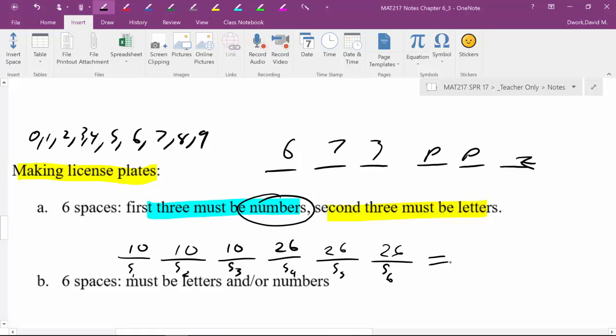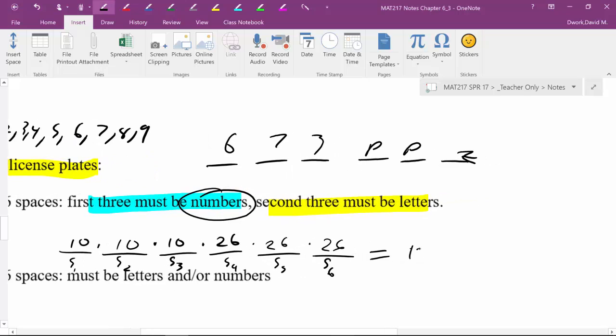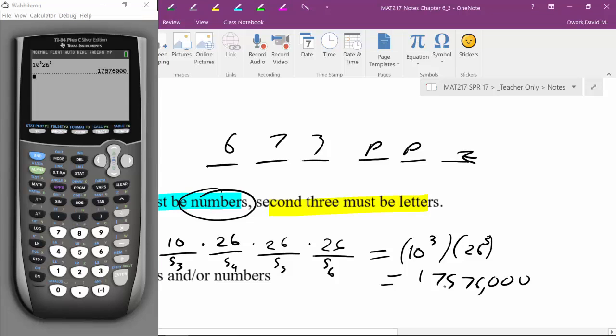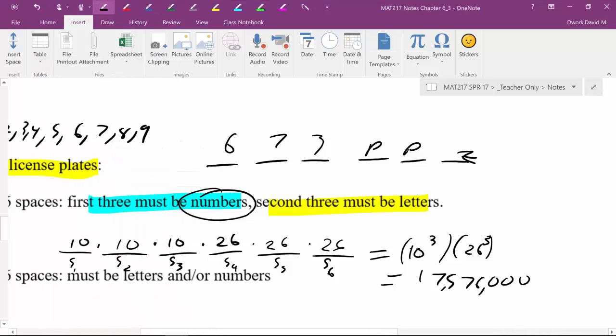Now what does that work out to be? Well, since I've filled in all my choices and I had six decisions, as we learned from the multiplication principle, you take your number of choices in each decision and multiply them. So this is just going to be 10 to the third times 26 to the third. I'm going to pull up my handy dandy calculator. That will give me 17,576,000. So that comes out to be 17 million, 576,000 license plates.